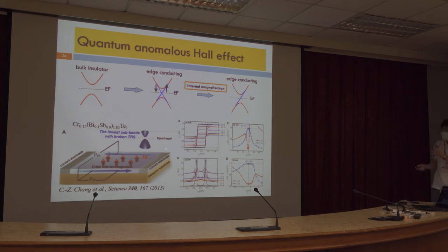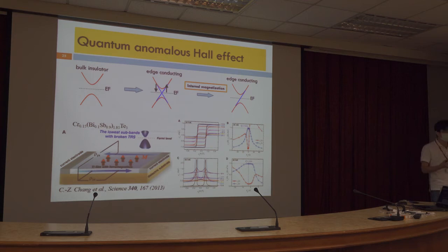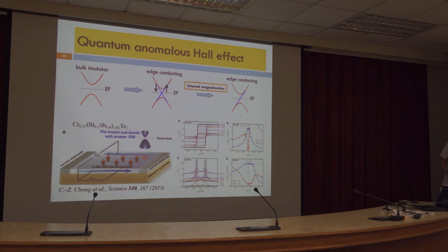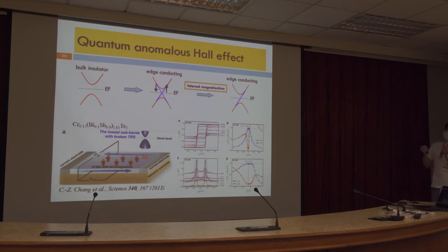However, in this experiment, the doping is very hard to control, and the interaction between the magnetic elements is very weak. So the transition temperature of this system is very low — only about 30 millikelvin. So an obvious question arises: does there exist an intrinsic topological magnetic material without doping?